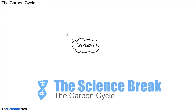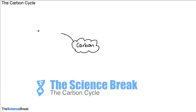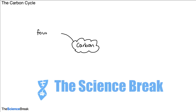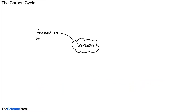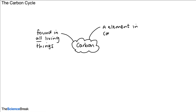Firstly, why is carbon so important? The first thing is that it's found in all living things — it's an element found in all living things. It makes up different substances in the body tissue. It's an element found in carbohydrates, and all living things contain carbohydrates. An example of an important carbohydrate is glucose, which contains carbon.